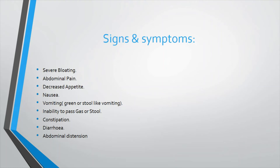The symptoms of intestinal obstruction include severe bloating or abdominal distension — swelling due to food materials, gas, and fluid unable to pass. There is swelling or distension of the abdomen with accumulation, decreased appetite, nausea and vomiting. Vomiting may be green, bile-stained, or stool-like. Inability to pass gas or stool — constipation. In partial obstruction there can be diarrhea along with abdominal distension.